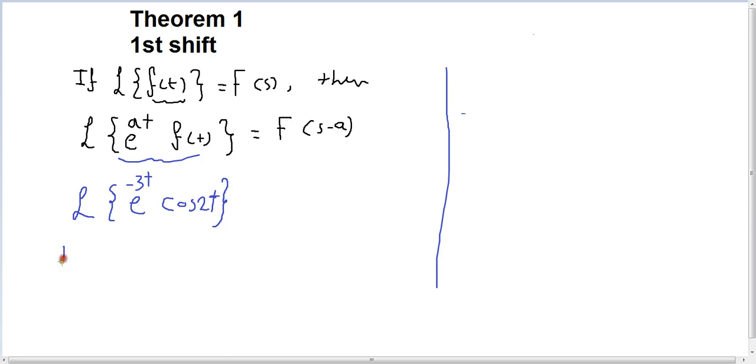Number one, we're going to get Laplace of cosine 2T, then we're going to shift it by A. So cosine 2T, we proved it or we know it. So cosine is equal to S over S squared plus omega squared, so omega squared is 2 squared. We have F of S right now.